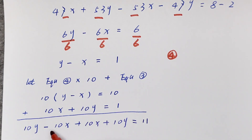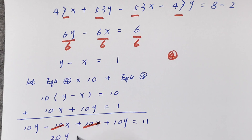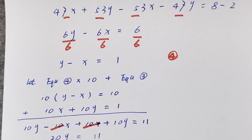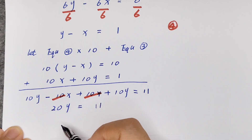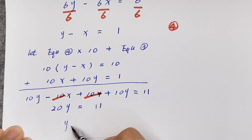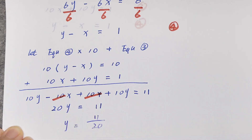Now the 10x terms will cancel with each other. So it will be 20y is equal to 11. So y is equal to 11 over 20.